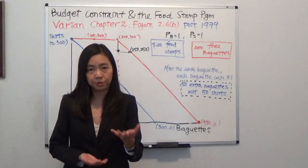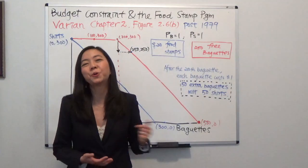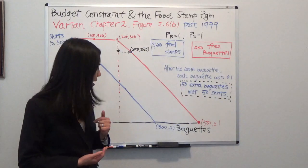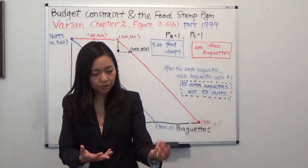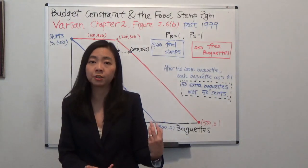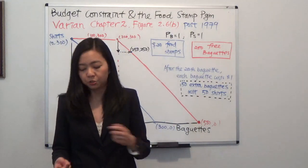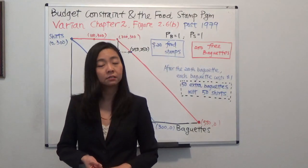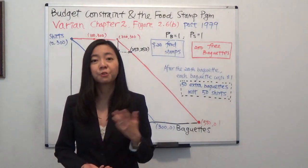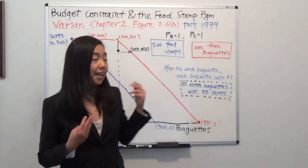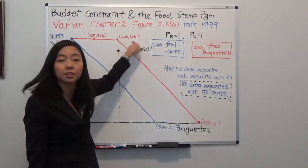Now the government is giving you the food stamps. Think about those $200 food stamps as 200 free baguettes. If you consume those 200 free baguettes, you still have $300 because the baguettes are free from the government. So you can use this $300 to buy t-shirts only. In that case, you will end up consuming 200 baguettes free from the government and 300 t-shirts — that's the point 200 baguettes and 300 t-shirts.